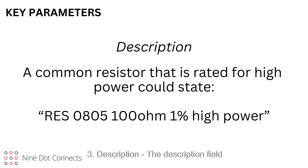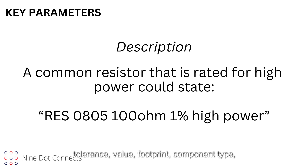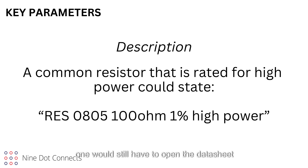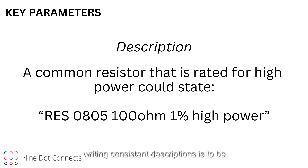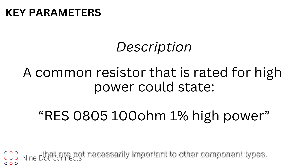3. Description — the description field summarizes the component in one single parameter. If a bill of materials is uploaded into a purchasing or accounting database, the only way one could quickly obtain the component's essence — for example, voltage, tolerance, value, footprint, component type, etc. — would be this description. Any other data in the record, like manufacturer's name and part number, would require a search or the need to piece information together. Even if there was a link to a datasheet, one would still have to open the datasheet to obtain the essence of the component. It is strongly suggested that a method of writing consistent descriptions be documented and used for each component type — resistors, capacitors, diodes, ICs, etc. Each component type has characteristics that are not necessarily important to other component types; thus, an all-purpose description format could be problematic. As for a description format for a given component type, it is better to list characteristics in order of general first, and then specifics. For example, a common resistor that is rated for high power could state: res 0805, 100 ohm, 1% high power.